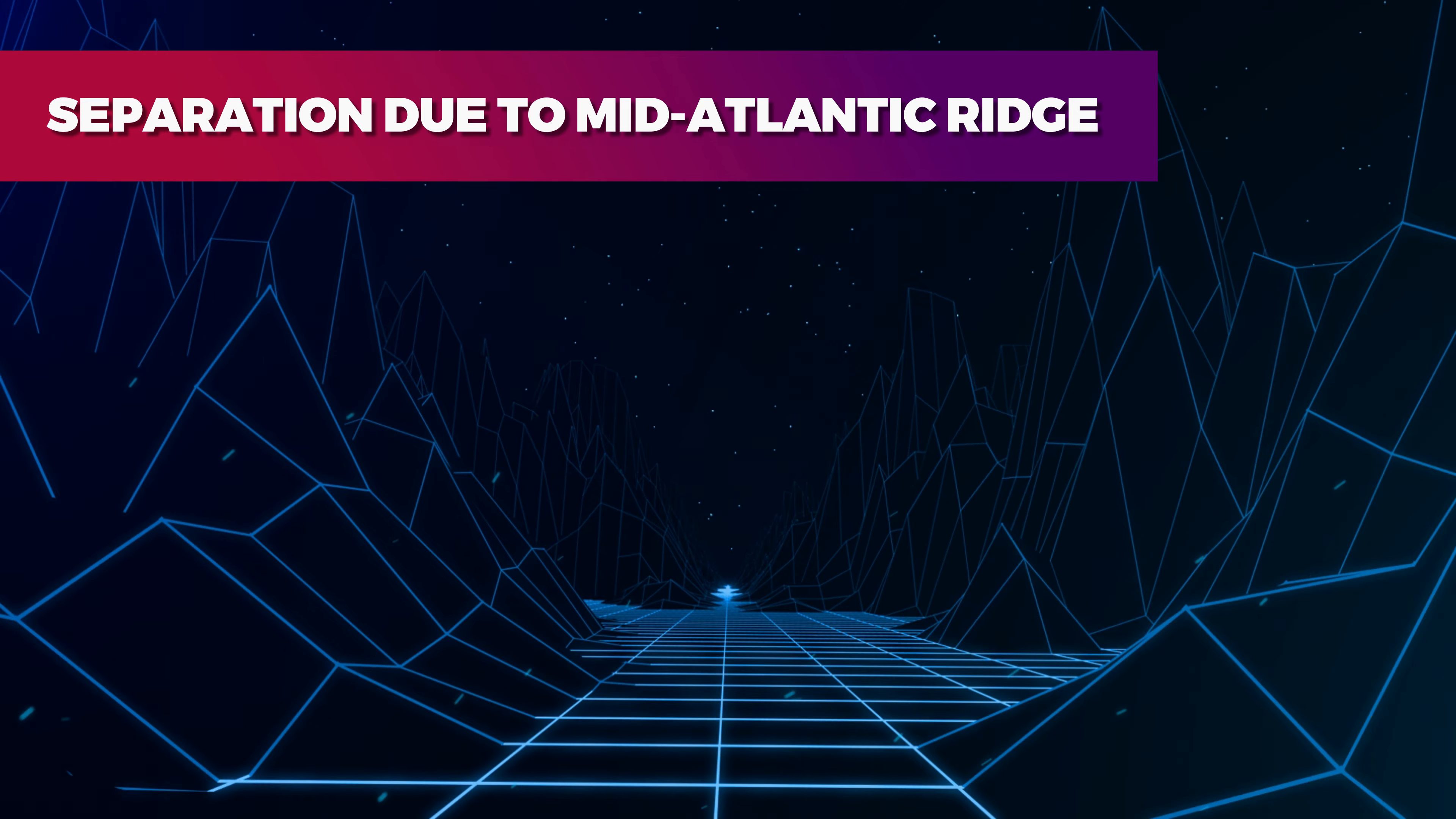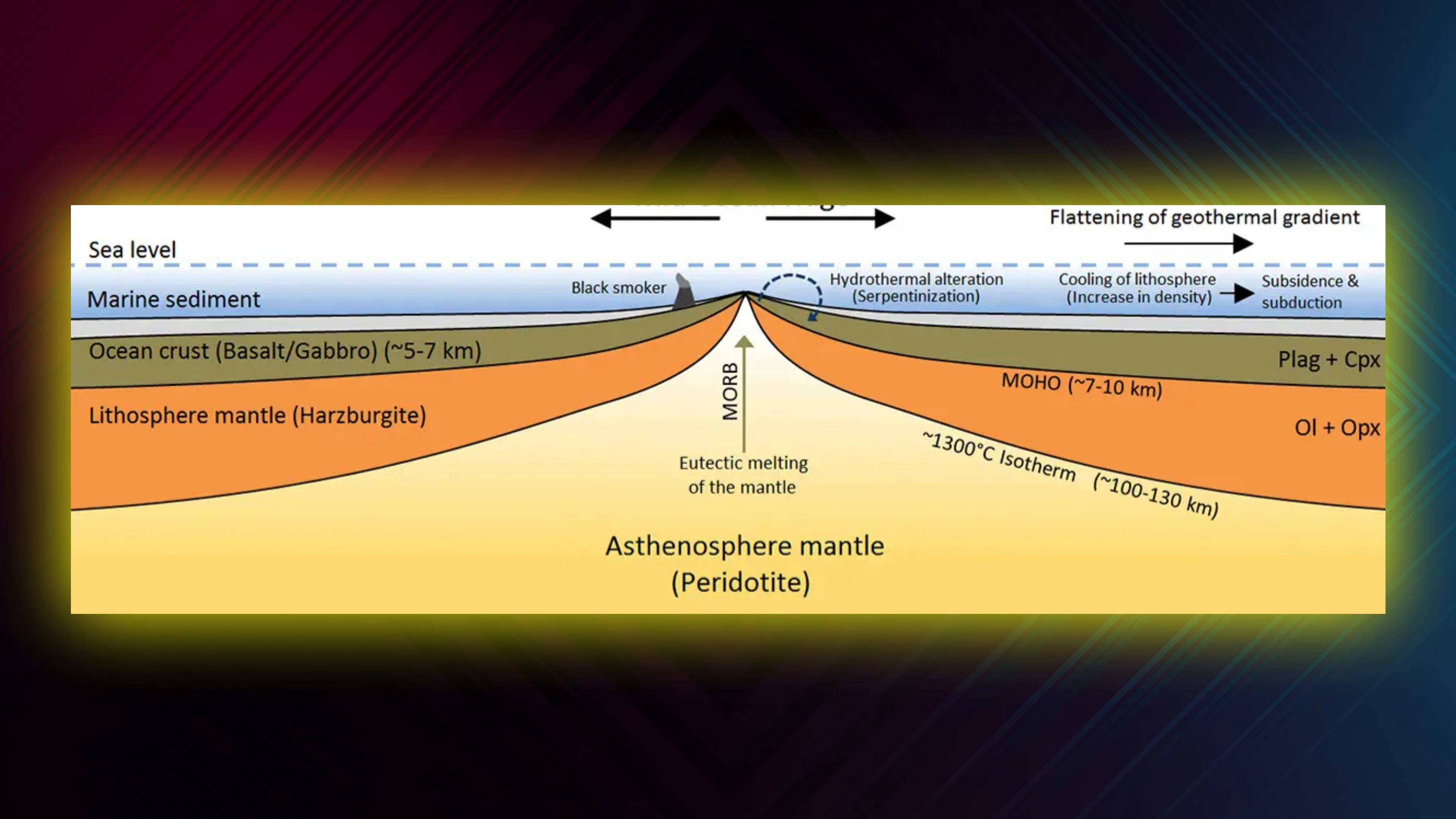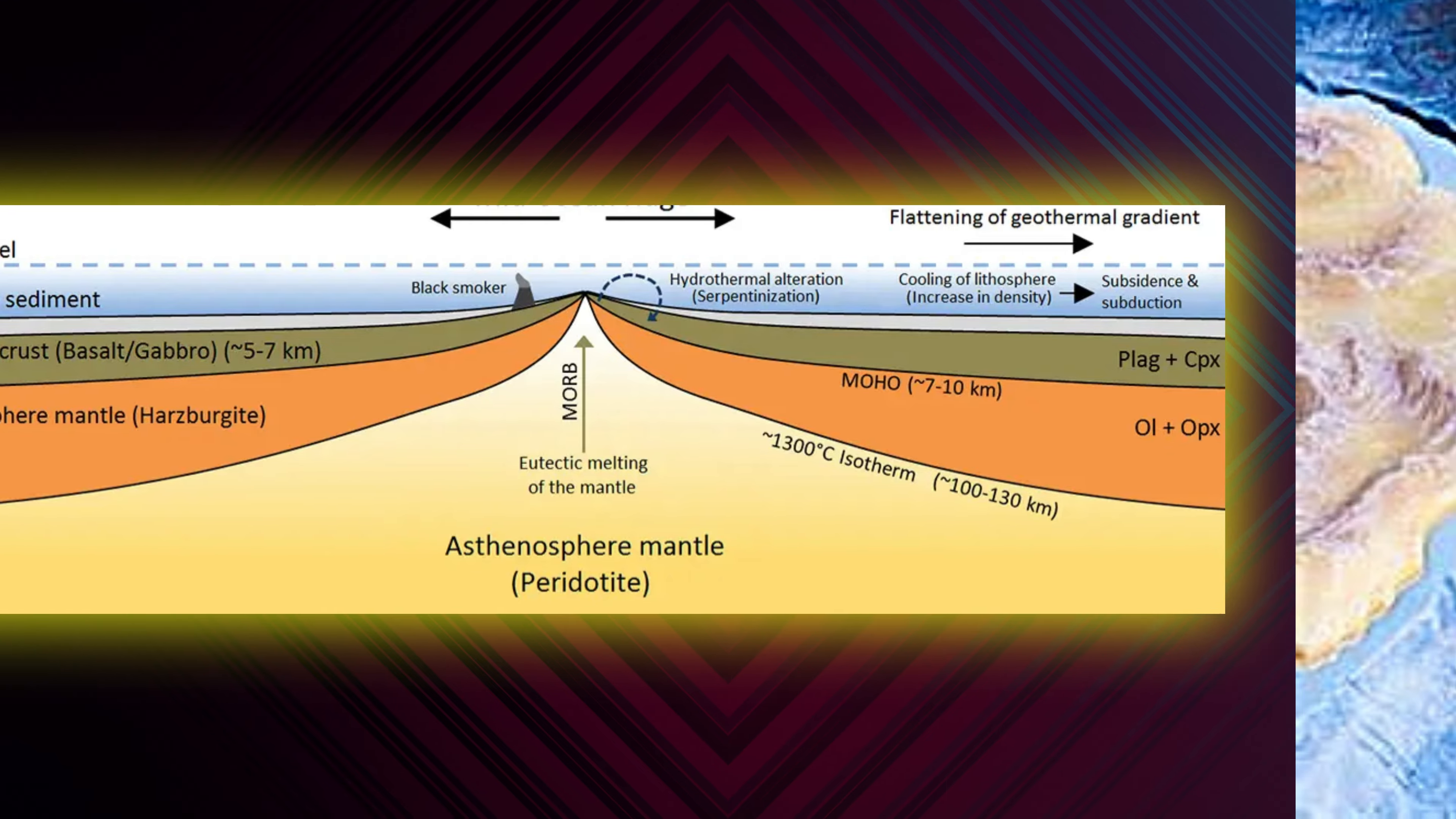Number three: Separation due to mid-Atlantic ridge. The separation is also between the two oceans due to the mid-Atlantic ridge. This mountain range is present between them that runs along the center of the Atlantic Ocean.